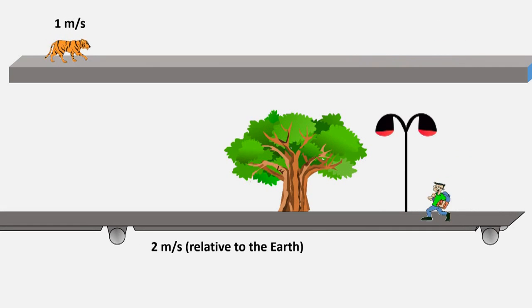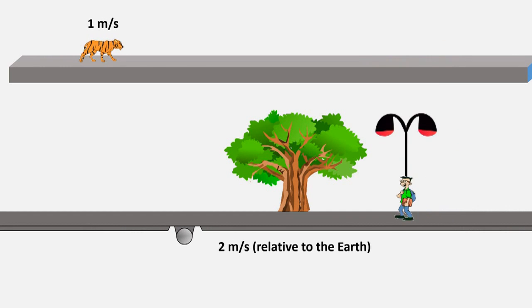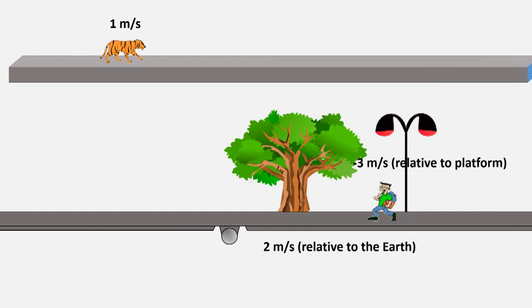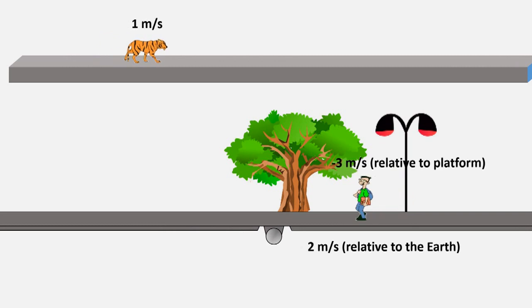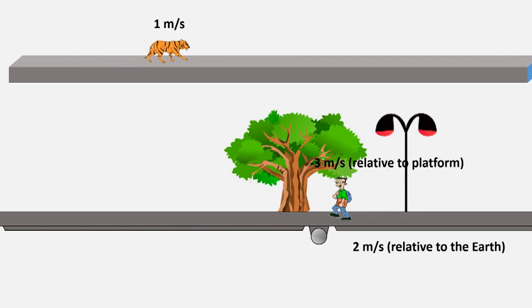If a boy now walks towards the rear of another platform with a velocity of negative 3 meters per second relative to the platform, blissfully unaware of the danger he's in, I might add,